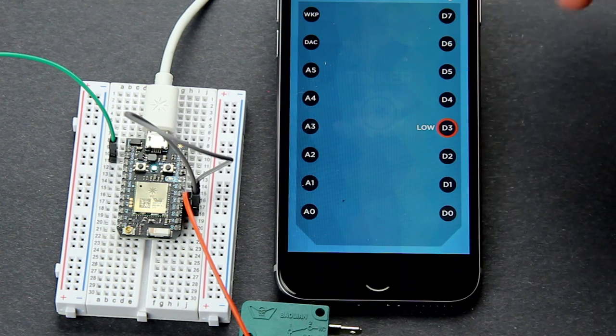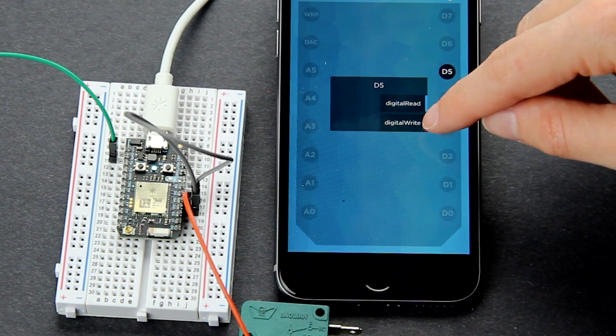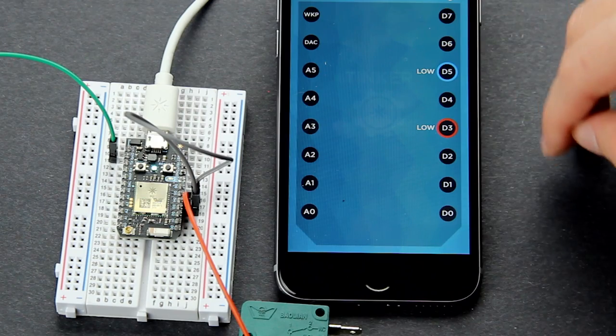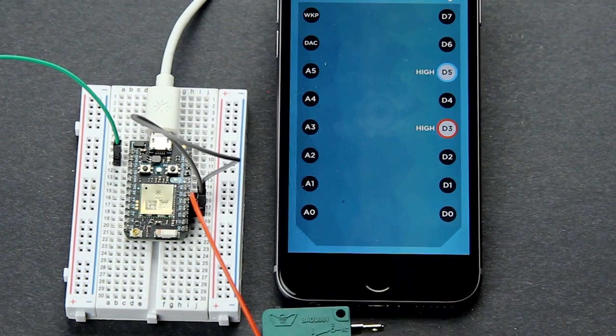We can also get information from our circuits by using the read option. Using digital read, we can look for 0 or 3.3 volts coming into a pin. Again, this is low or high.